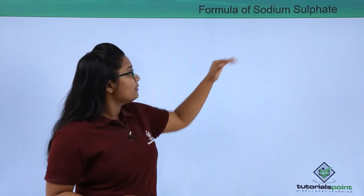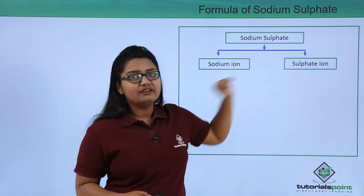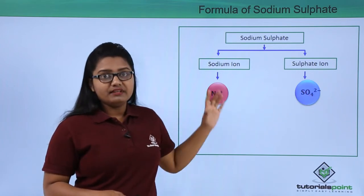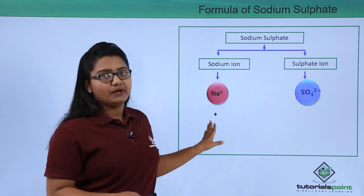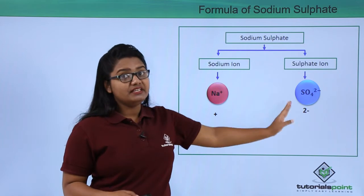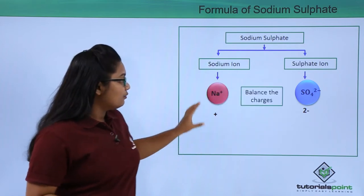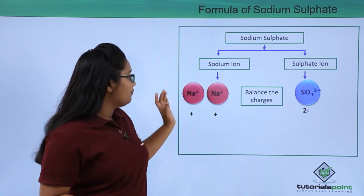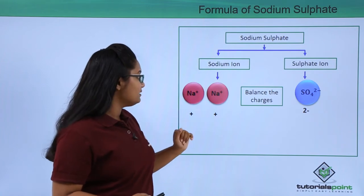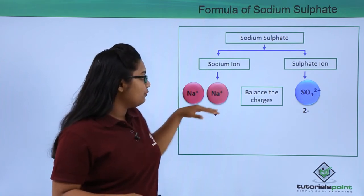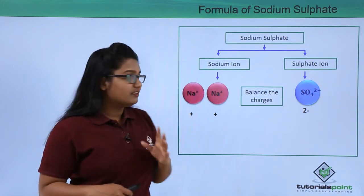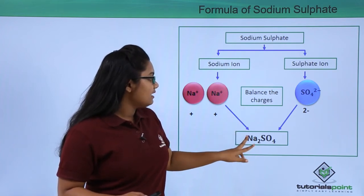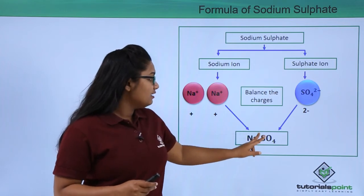Now let us write the formula for sodium sulfate. It has a sodium ion (Na⁺) and a sulfate ion (SO₄²⁻). Sodium has a charge of 1+ and sulfate has a charge of 2−. To balance the charges, we add one more sodium ion, giving two positive charges that equally balance the two negative charges of sulfate. The chemical formula of sodium sulfate is Na₂SO₄.